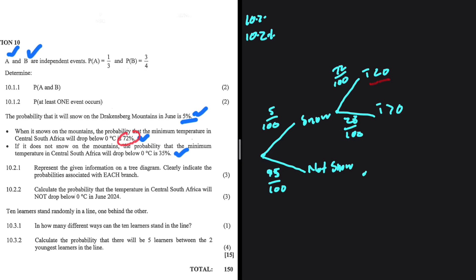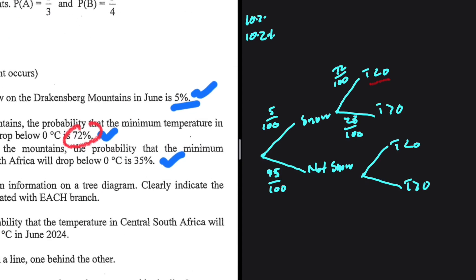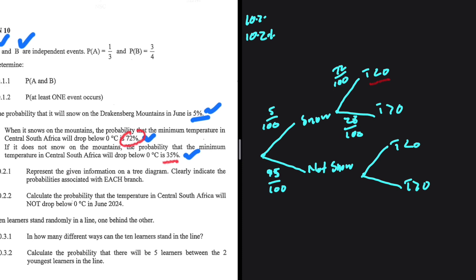For the not-snow branch, T can be less than 0 or greater than 0. If it does not snow, the probability that the temperature will go below 0 degrees Celsius is 35%. So we have 35 divided by 100. For T greater than 0, we have 65 divided by 100 — since 65 plus 35 equals 100. This is the information represented on the tree diagram for 10.2.1.